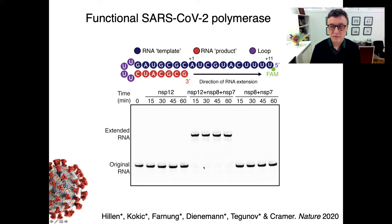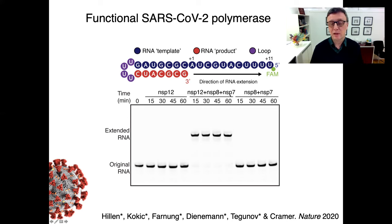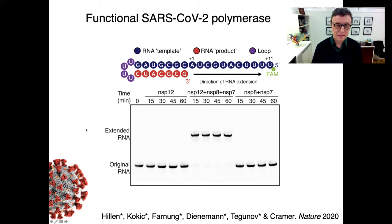The extension is by several nucleotides — in total 11 nucleotides — and that leads to a longer RNA product when you use a polymerase that consists of all three subunits that are known: NSP7, NSP8, and NSP12.